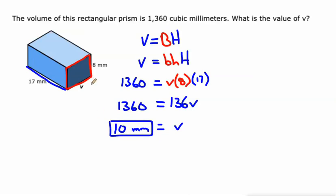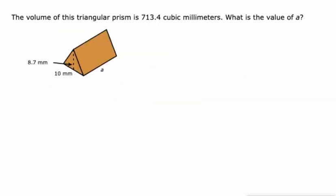So if we just do the three dimensions 10 times 8 times 17, multiplying by each other, we'll get 1360. Let's do another one like that.